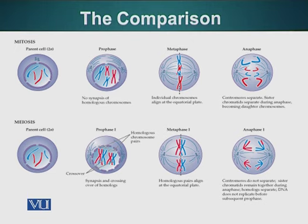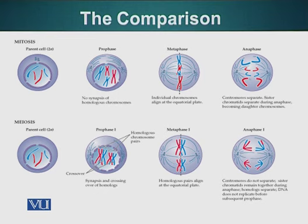The homologous chromosomes will be separated in the subsequent anaphase phase. At this stage, the centromeres are not separating — they are still holding the two sister chromatids together. After anaphase one, we will go to the telophase, where the process repeats.